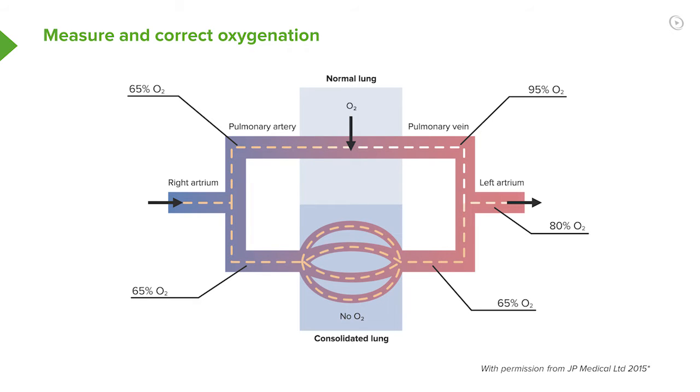So in this example, we have a patient who has quite extensive consolidation, and therefore the deoxygenated blood shunting through that consolidated lung has a significant effect on the arterial oxygen concentration, reducing it down to about 80%.